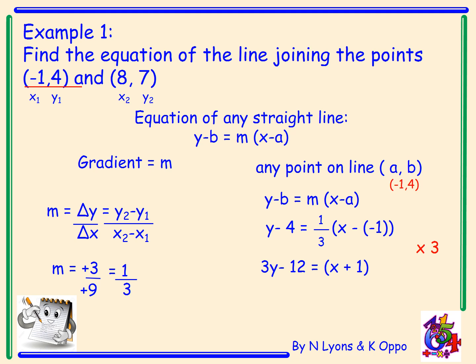Now all I have to do is get rid of the bracket and rearrange into the form ax plus by equals c. That gives me x minus 3y equals negative 13. And that's the equation of the line joining the points (-1, 4) and (8, 7).